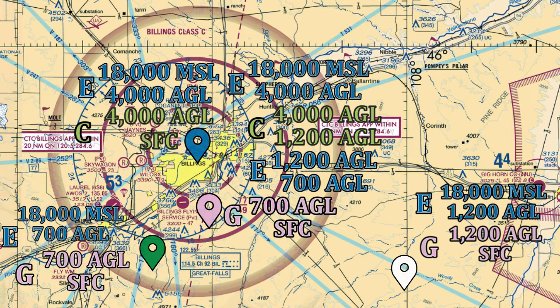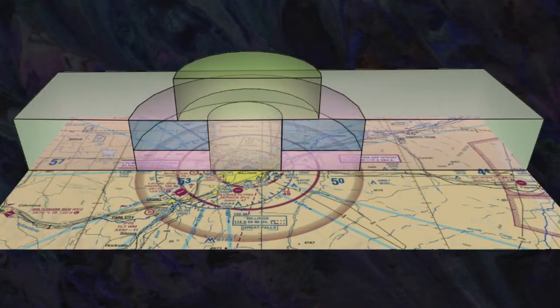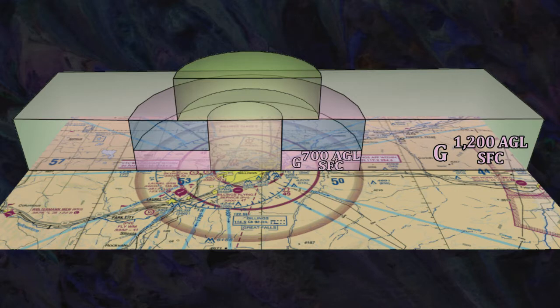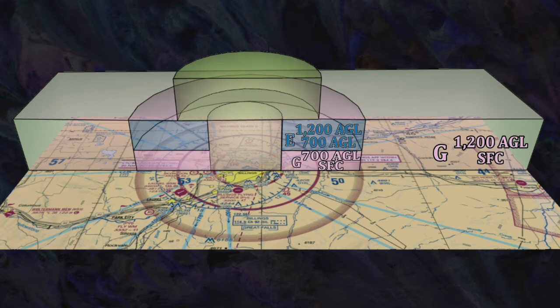I know this is completely confusing, so let's look at it in three dimensions. Out here we have Class G surface to 1,200 feet. Inside of the magenta, we have G surface to 700 feet. At 700 feet, Class Echo starts and goes up to 1,200 feet, right up to Class Charlie airspace. Then Class Charlie goes from 1,200 up to 4,000 feet AGL. Does that make it any clearer?